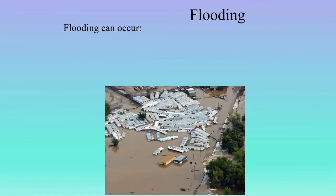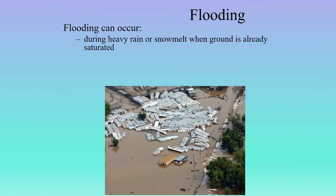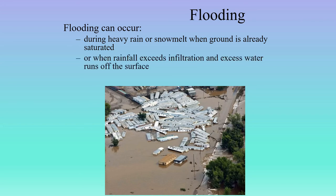Flooding can occur during heavy rain or extensive snowmelt when the ground is already saturated — when that cup is full, you can't fit any more water into it. The only way the water has to go is over the surface, or when the rainfall exceeds the infiltration capacity of the ground and the excess water runs off the surface.